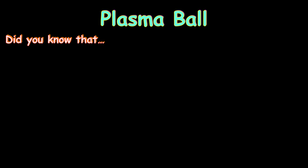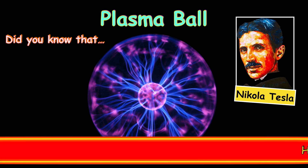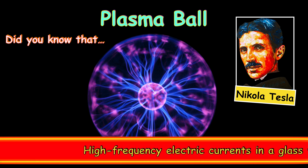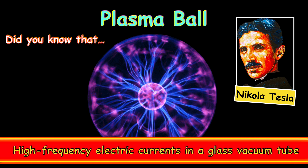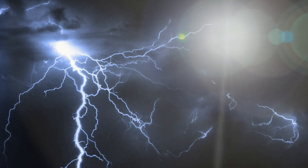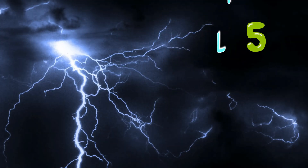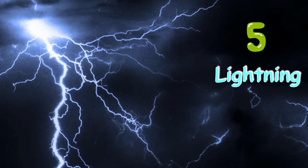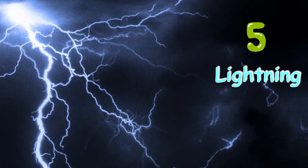Did you know that the plasma ball was invented by Nikola Tesla? He was experimenting with high-frequency electric currents in glass vacuum tubes. Number five: lightning. When a column of electrons flows from sky to ground, the air that it passes through lights up with energy.